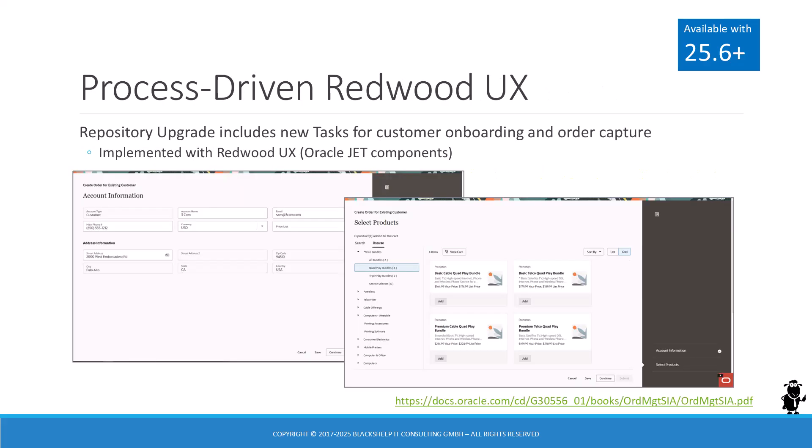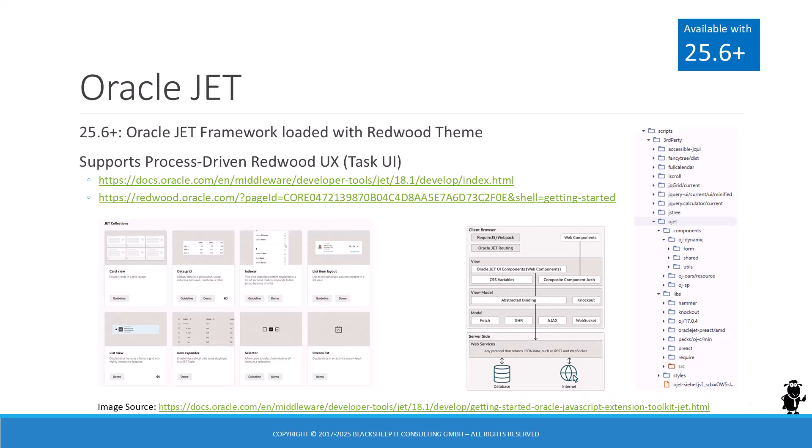Exactly one year ago, Oracle shipped Siebel 24.6, which included the Redwood theme, an open UI theme inspired by the Oracle Redwood design system. With 25.6, Oracle takes another step on the path to Redwood with the availability of process-driven Redwood UX. Behind that term stands the initiative to use the well-established Siebel task-based UI to guide users through processes. Organizations using Siebel Customer Order Management will find new tasks in the repository after applying the repository upgrade. Oracle provides two new tasks for customer onboarding and order capture. These tasks, or rather their UI, are implemented with Redwood components powered by Oracle JET, JavaScript Extension Toolkit. Indeed, Oracle JET has officially landed in Siebel OpenUI.